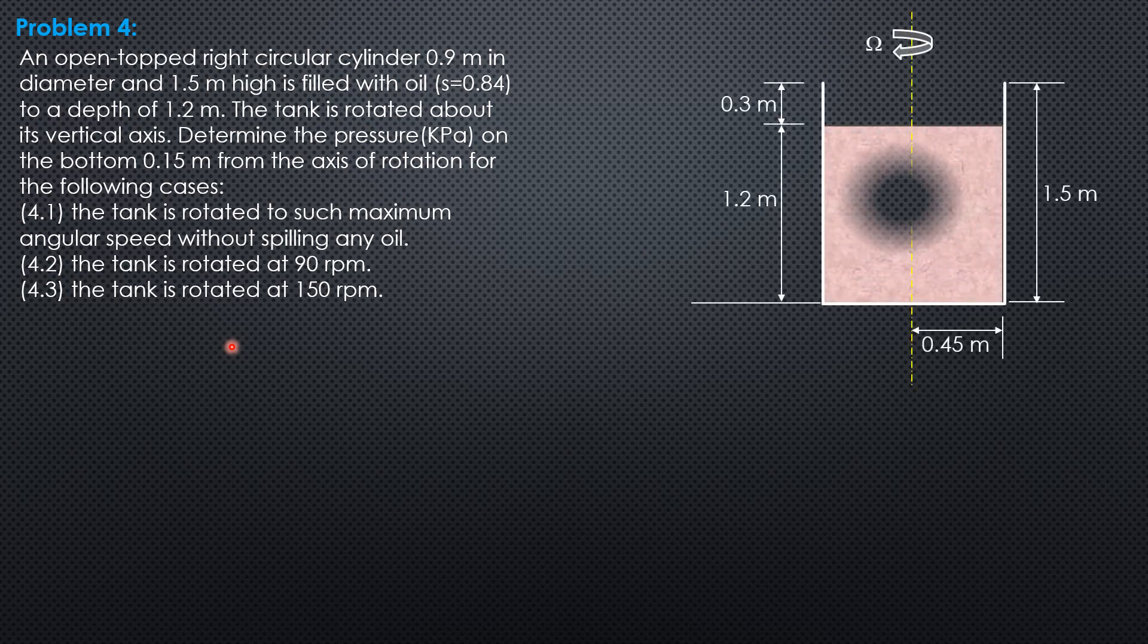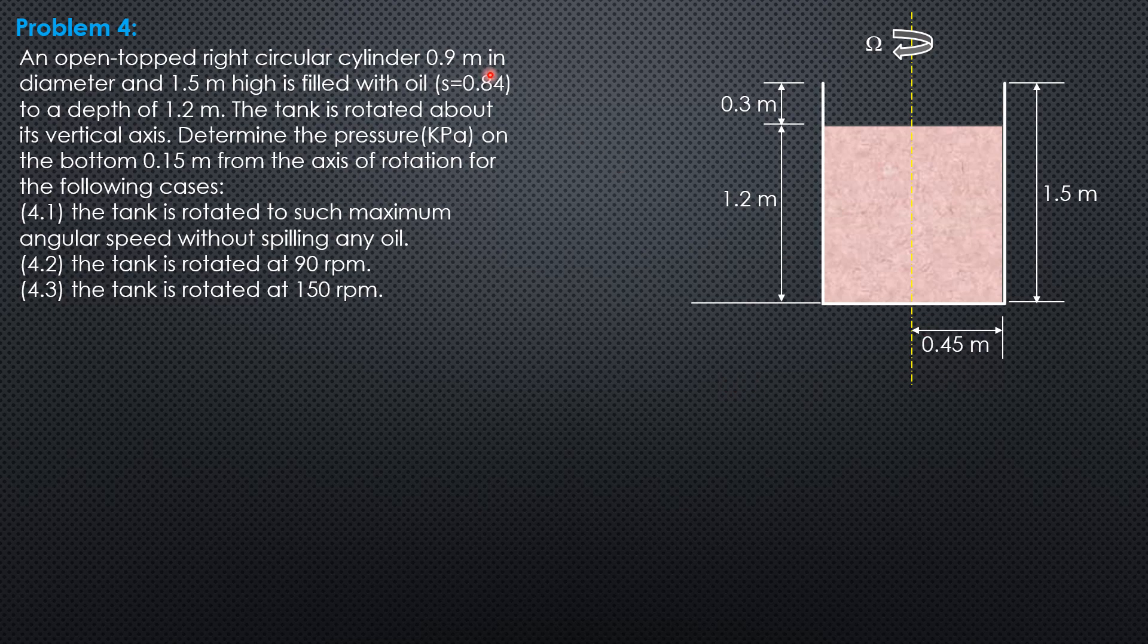Let's draw the figure first so we can analyze it well. The radius is 0.45, half of 0.9, 1.5 meters high, and it's filled with oil of specific gravity 0.84. Therefore, this is 1.5 minus 1.2, so 0.3 meter the value of k.